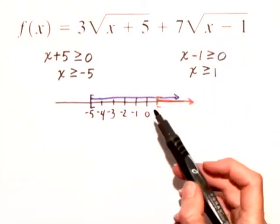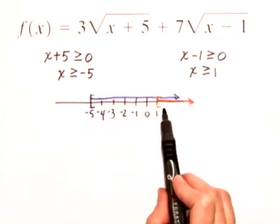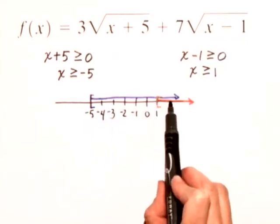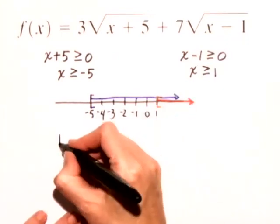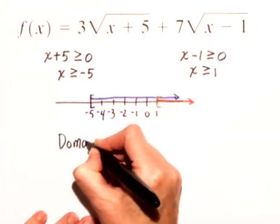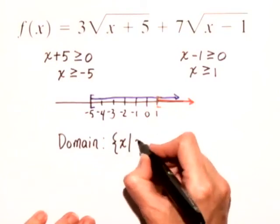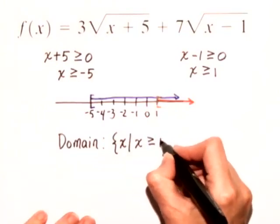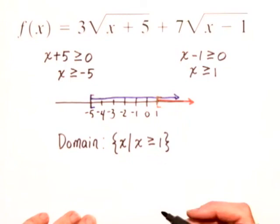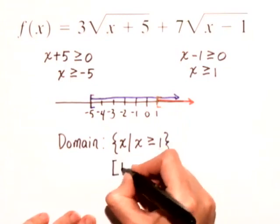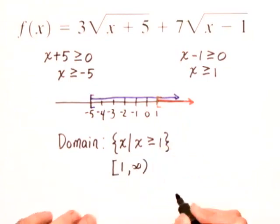So I need to restrict my domain to the intersection of these two. I really need to start from 1. My domain is the set of all x such that x ≥ 1, or in interval notation, [1, ∞).